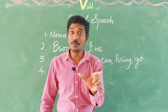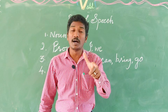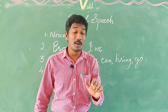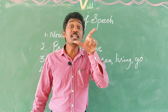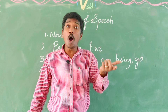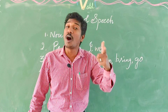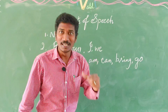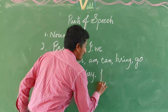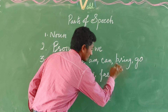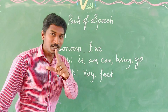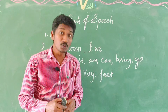An adverb can also describe another adverb. For example: 'She runs very fast.' Here 'very' describes the adverb 'fast' — so 'very' is also an adverb. Words like very, fast, carefully, slowly are all called adverbs.